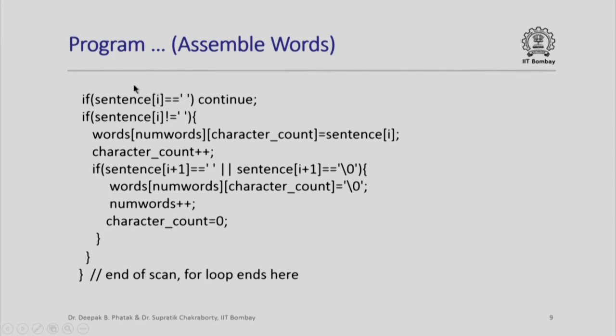Let us see what do I do with the i-th character. As we outline in our program design, if the i-th character is blank, I simply continue with the next iteration, which means I ignore the blank. If the i-th character is not blank, that means I have encountered a non-blank character, which must be inserted in the current word. So, what I do? The i-th character of sentence, I insert in the character count of current word which is indicated by numbers. I increment the character count by 1 when I finish this.